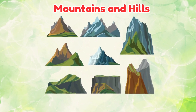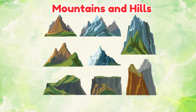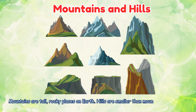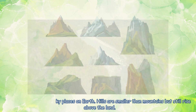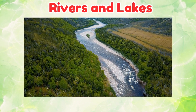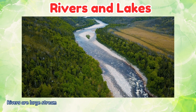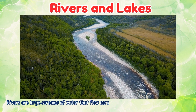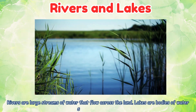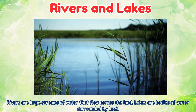Mountains and Hills. Mountains are tall, rocky places on Earth. Hills are smaller than mountains but still rise above the land. Rivers and Lakes. Rivers are large streams of water that flow across the land. Lakes are bodies of water surrounded by land.